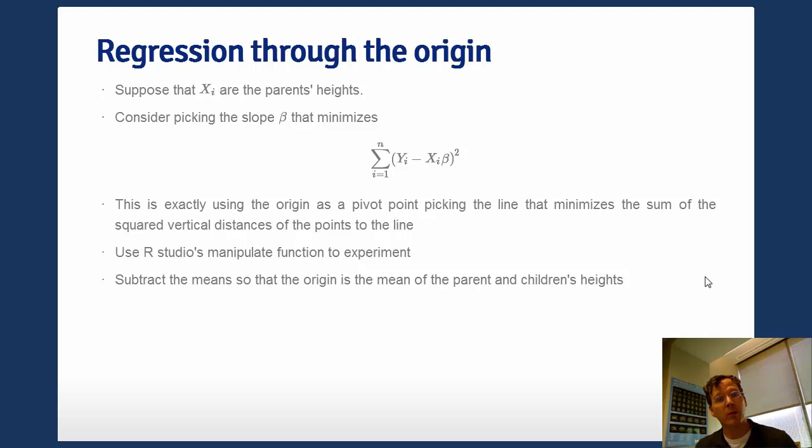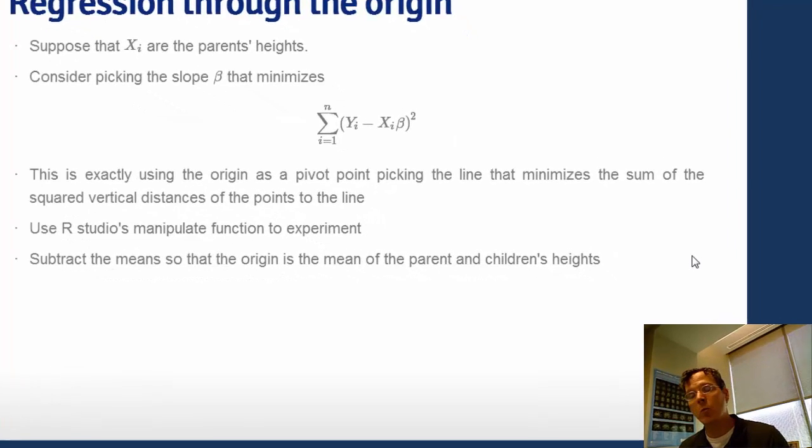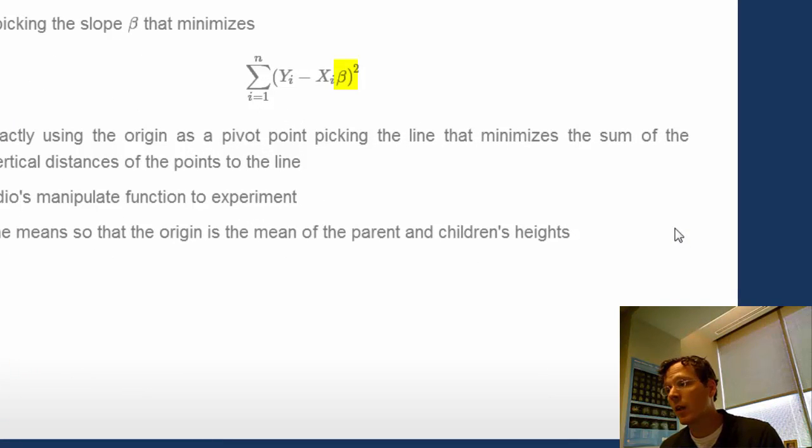So in other words, it has a y intercept of zero. Well then the line is just x beta. Y equal x beta defines a line through the origin. In order to find the best line, all we have to find is the slope. We would want to find the slope beta that minimizes the sum of the squared distances between the observed data points, the yis, and the fitted data points on the line, xi beta. We'll square that distance and add them up, and this is directly analogous to finding the least squares mean that we did just a couple of slides ago. So this is exactly using the origin as a pivot point and picking the line that minimizes the sum of the squared vertical distances between the points on the line.